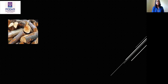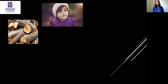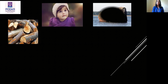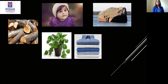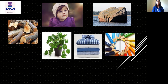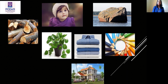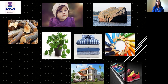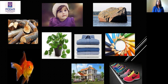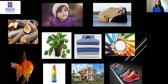Can you identify these? These are wood logs, a small baby, a big rock, plants, clothes, pencils, a big house, colorful shoes, fish, and a bottle. Now these are not the only things present around you — there are many other things. These are just a few examples.